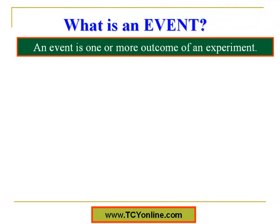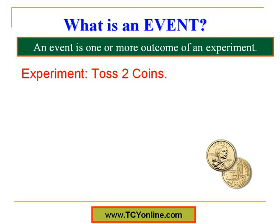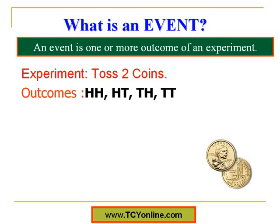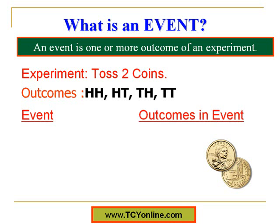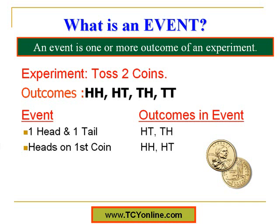After this we have event. An event is one or more outcomes of an experiment. To understand this, let's consider an example where I toss two coins. Tossing two coins is the experiment. The possible outcomes are: head and head, head and tail, tail and head, and tail and tail. Getting one head and one tail is simply an event, and the possible outcomes for this event are head-tail and tail-head.